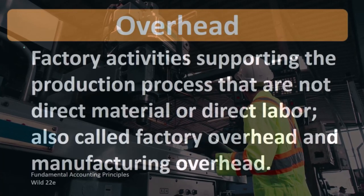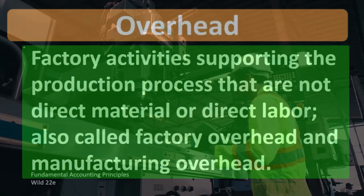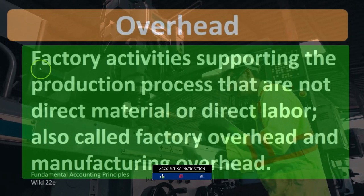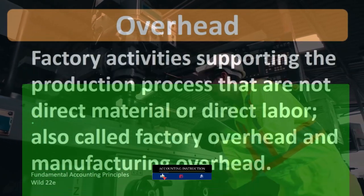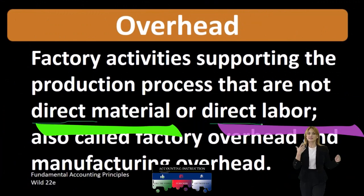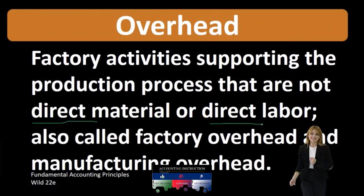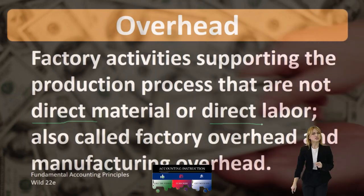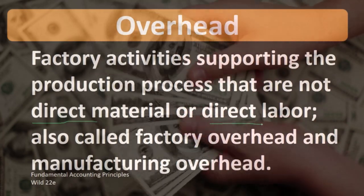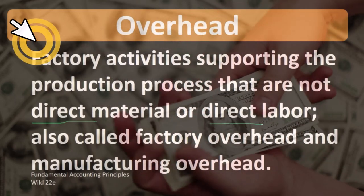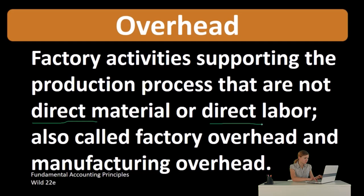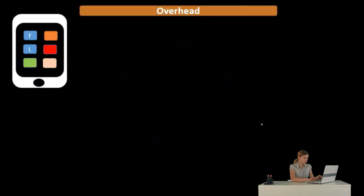Notice this definition is defining by excluding, or saying what factory overhead is not. Factory overhead in terms of inventory is not going to be the direct materials or the direct labor. That means anything else within a production process of a manufacturing company that is not direct materials or direct labor will go into overhead — we can think of overhead as that bucket of everything else we want to apply to the inventory.